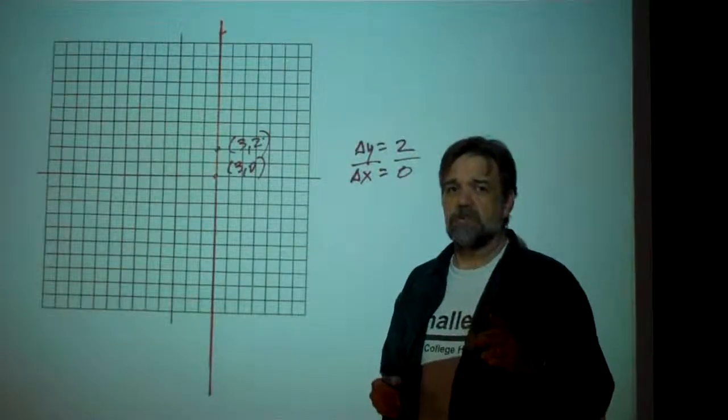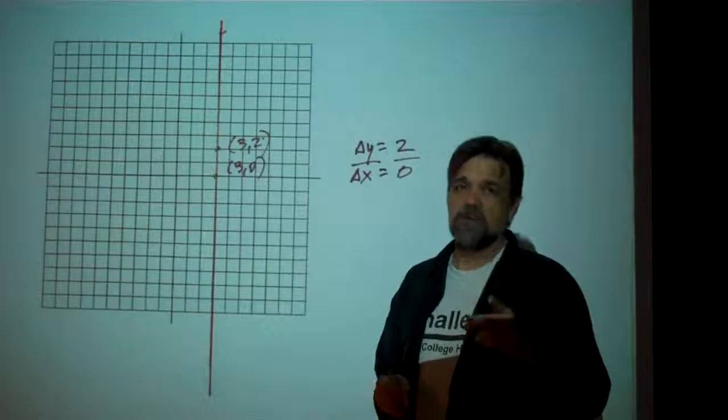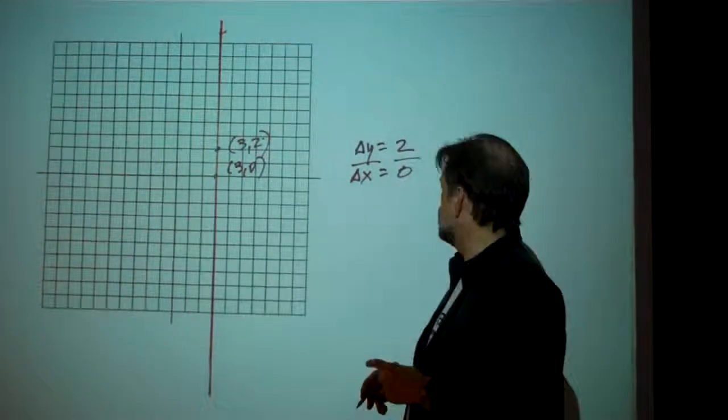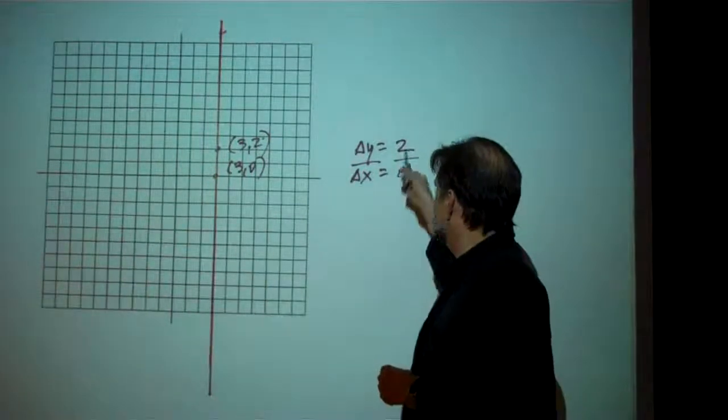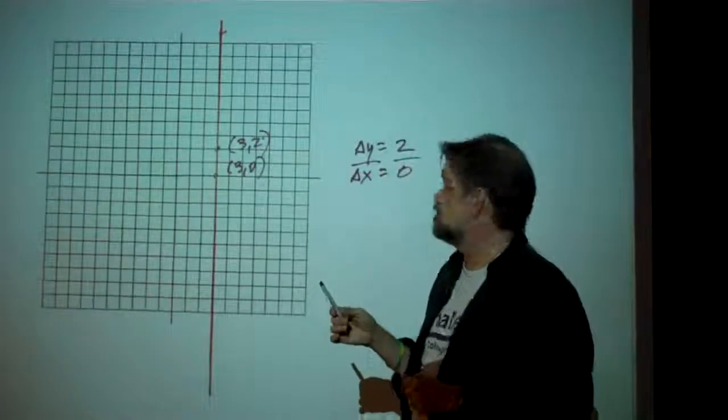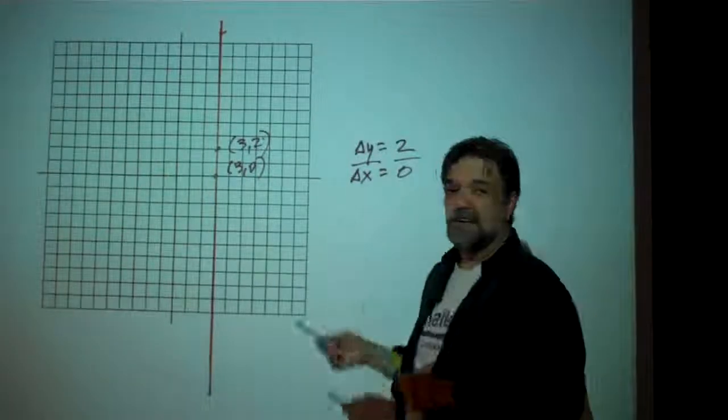Very few things you can't do in arithmetic, but one of them is divide by 0. So we've got a problem here. It's impossible to divide anything by 0, so what that tells me is